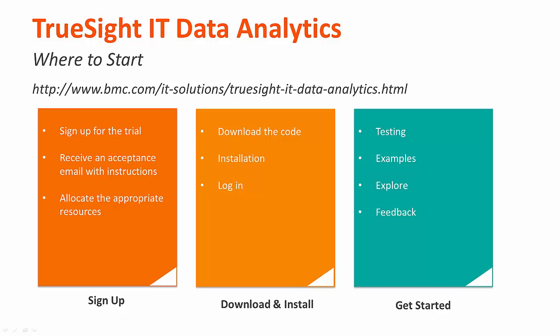So where do we start? First, you'll follow the link and sign up for the trial. You'll receive an acceptance email with instructions on how to download the code. You'll then allocate the appropriate resources, much of which you probably have already done. Next, you'll download the code and follow the installation instructions in the next video. After that, you can log on and start testing using either the examples that we provide or your own examples that you want to test with. Then you get some time to explore the product and provide us feedback.